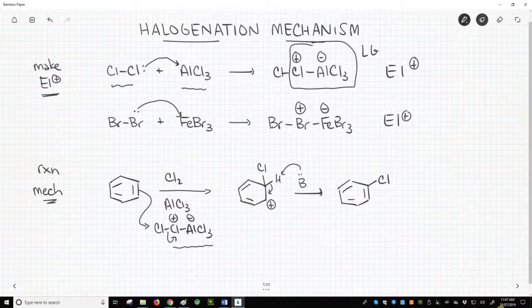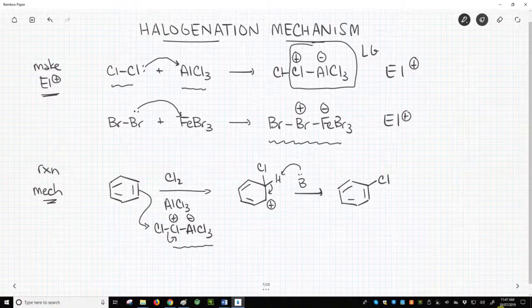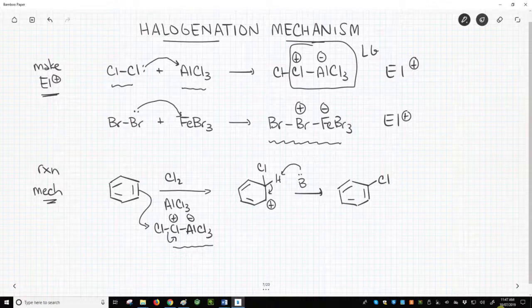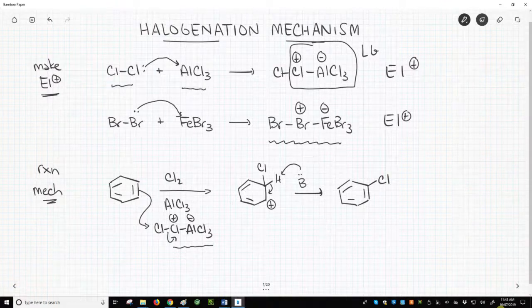Bromination is the exact same, except you attack the end bromine in our electrophile and the Br-Br bond breaks. Notice I haven't featured the iodination reaction. The iodination mechanism is a bit different, and the I2 molecule is activated with an oxidant in the reaction. We will not cover the iodination mechanism.